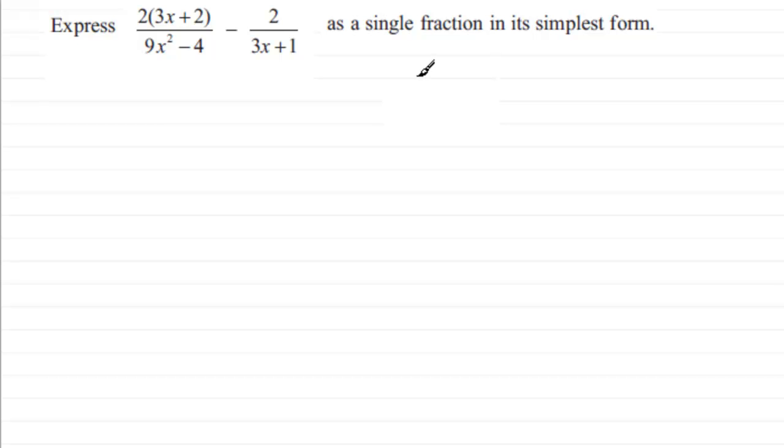Okay, welcome back. First thing I'd want to do is just copy out the question. We've got to express 2 over 3x plus 2, all over 9x squared minus 4, and then minus 2 over 3x plus 1 as a single fraction in its simplest form.